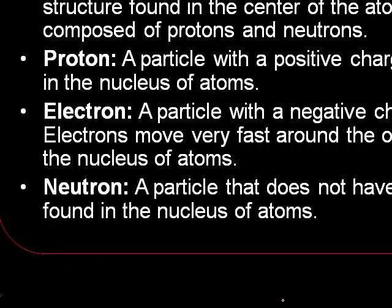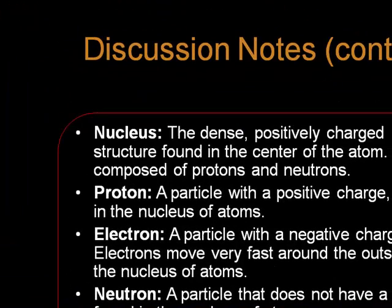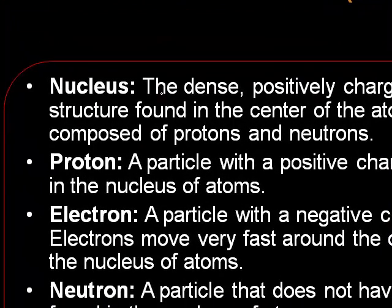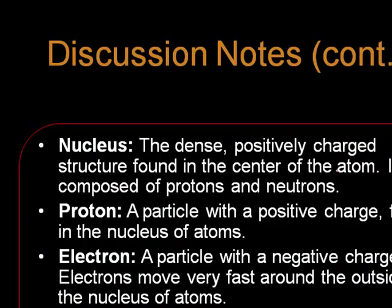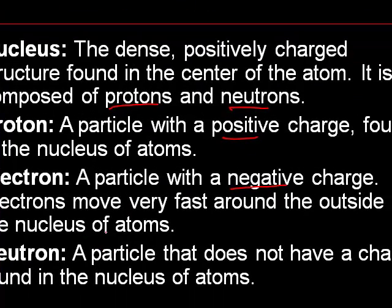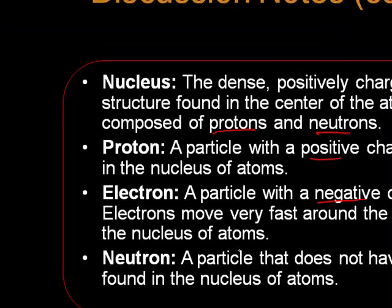Now in each individual atom of an element, as we'll learn about, there is a nucleus, protons, electrons, and neutrons. A nucleus is the dense, positively charged structure found in the center of the atom. It is composed of protons and neutrons. A proton is a particle with a positive charge found in the nucleus of atoms. An electron is a particle with a negative charge. Electrons move very fast around the outside of the nucleus of atoms. A neutron is a particle that does not have a charge found in the nucleus of the atom.